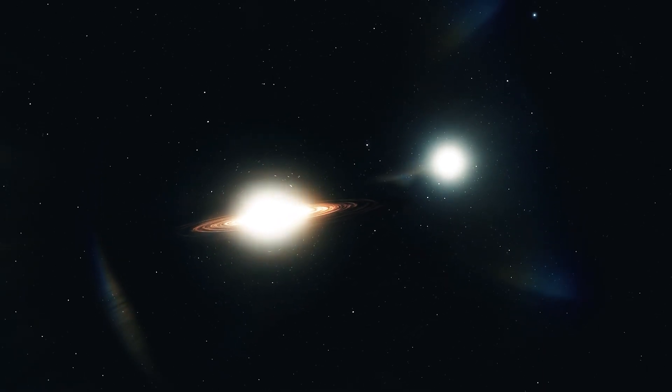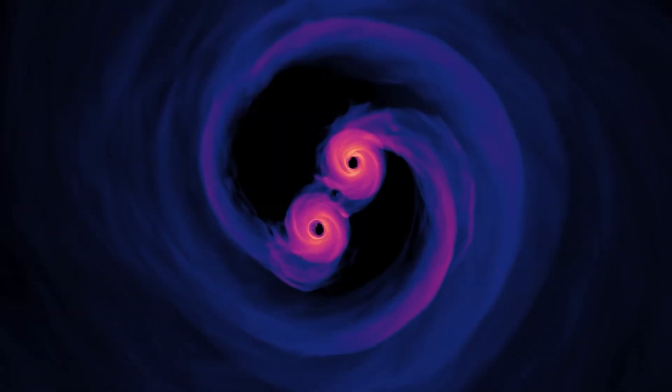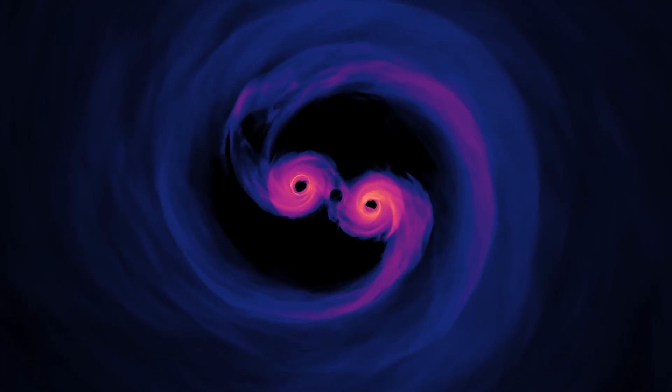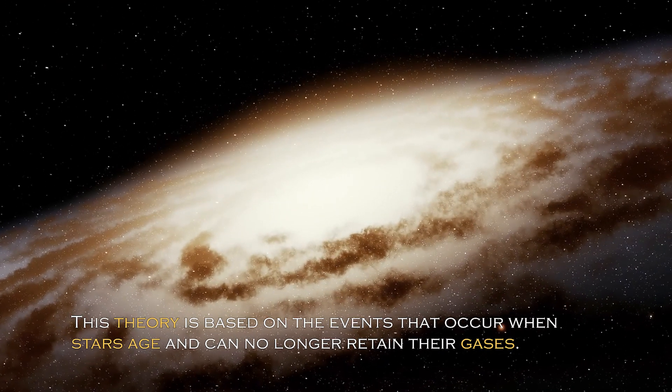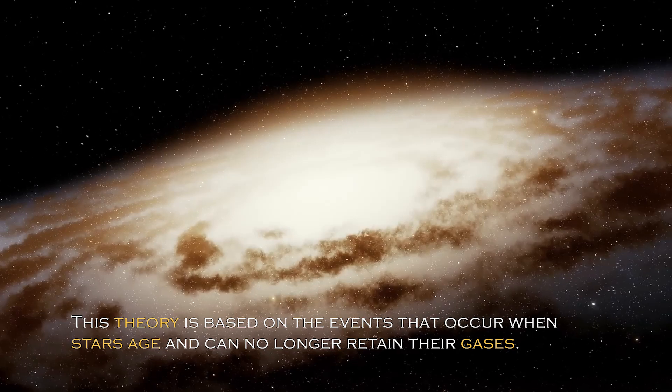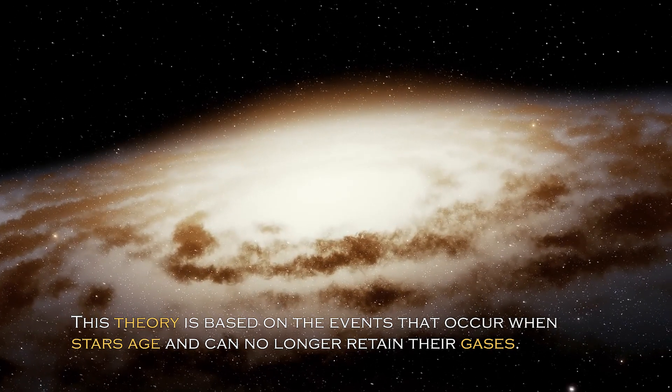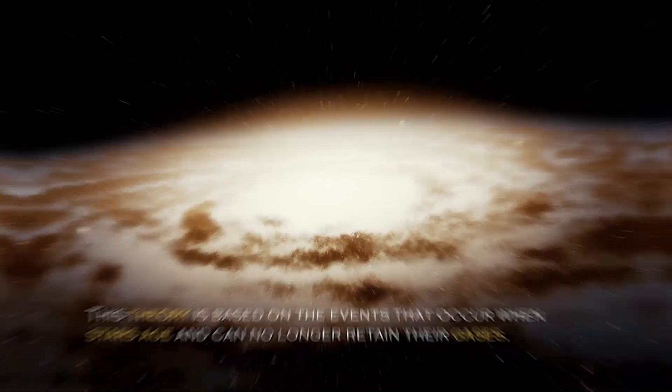Specifically, these stars and planets could continue to exist in the cosmos in a form that we could not currently detect. This theory is based on the events that occurred when stars age and can no longer retain their gases, leading to explosions known as supernovae.